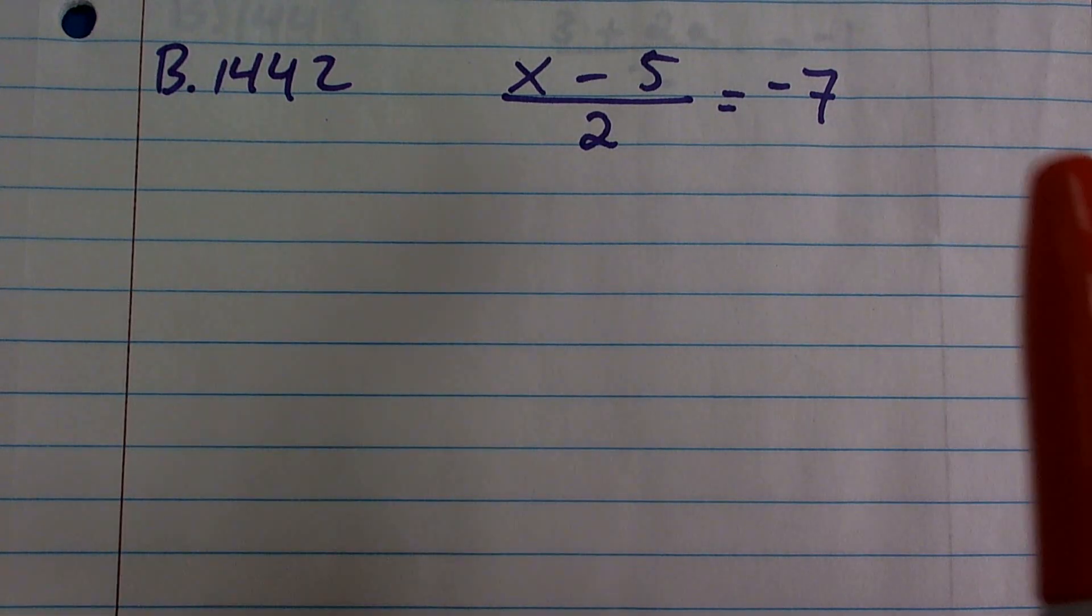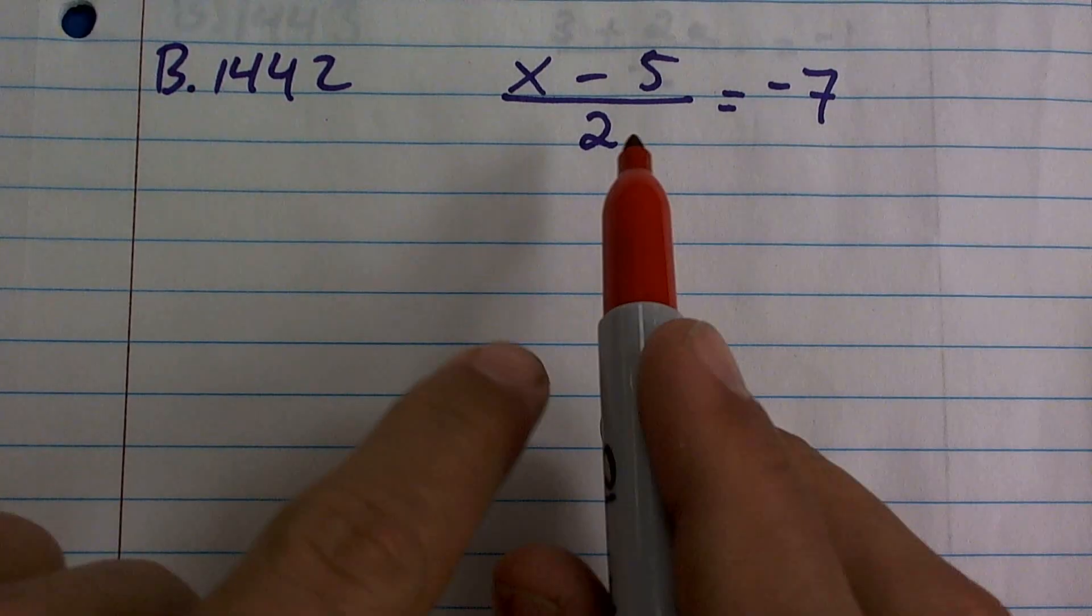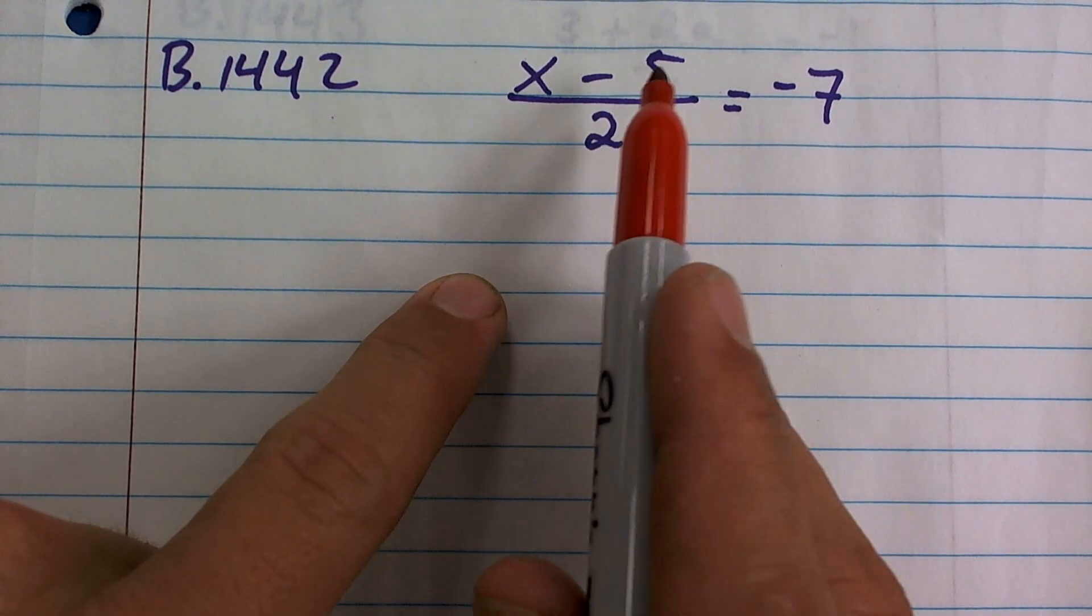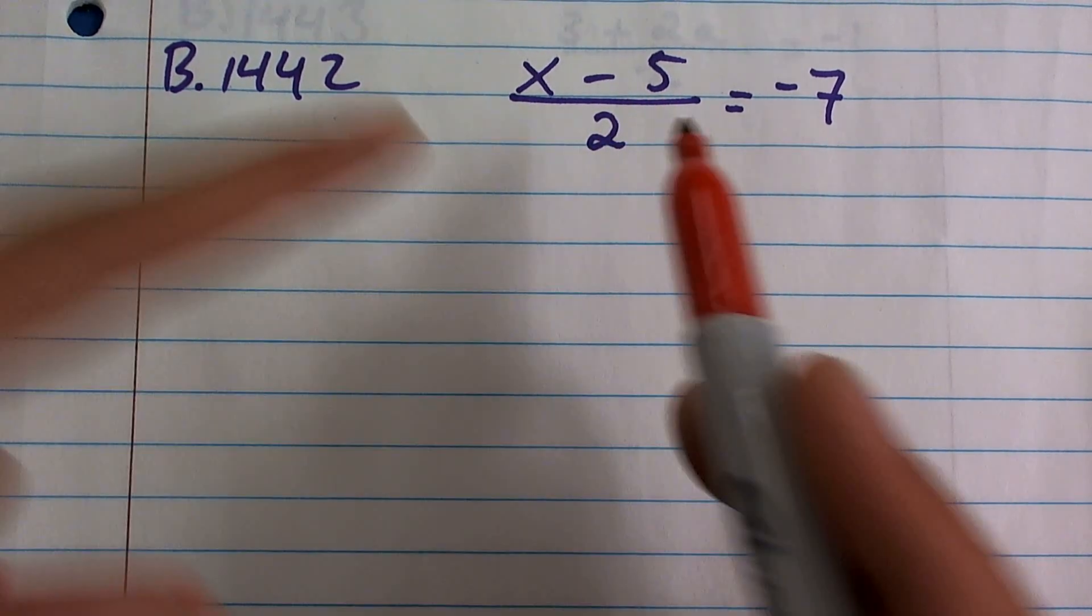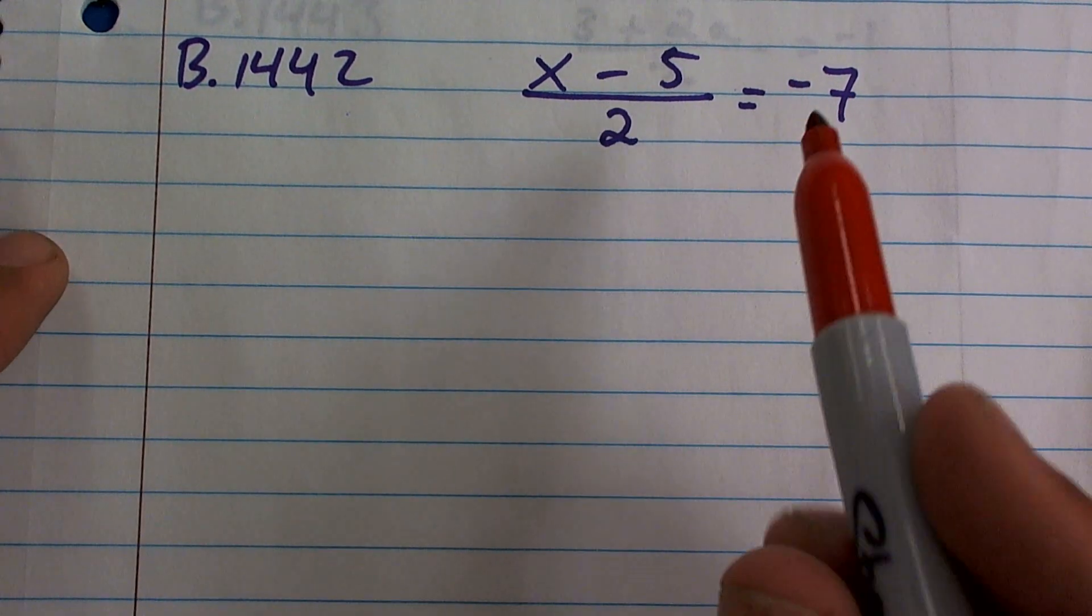So what we're going to have to do is, I'm going to show you two ways we can rewrite this. Remember, I'm dividing by two. Well, what is being divided by two? x is being divided by two, and negative five is being divided by two. So not one of them is being divided. Both of them are being divided by two.